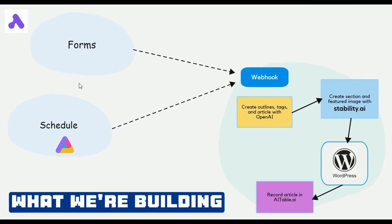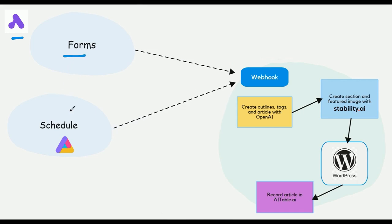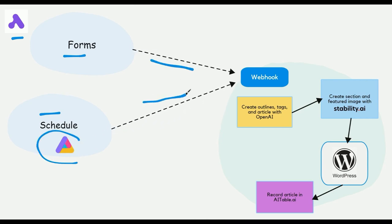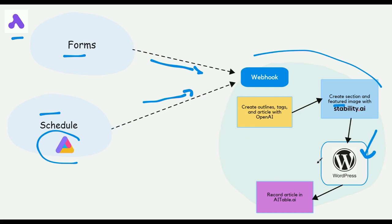Everything is going to be done inside the ActivePieces environment, automating it two different ways: the first is the form-based approach, the second is the schedule-based approach using AI table to store data. Both workflows are funneled through a webhook that encapsulates the entire automation — article creation, image generation, and posting to WordPress. We're also recording each article in AI table for record keeping.